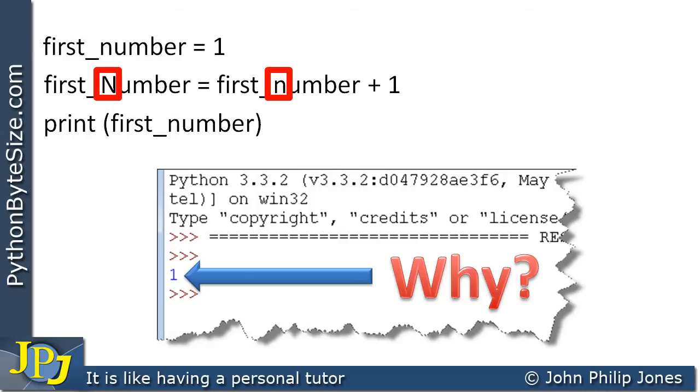you will see here that I've got a capital N and a lowercase n. That is sufficient to make these, as far as Python is concerned, completely different program variables. The fact that when I typed in, I put a capital N by mistake—that wasn't my intention—what I've actually achieved is the production of two different variables.